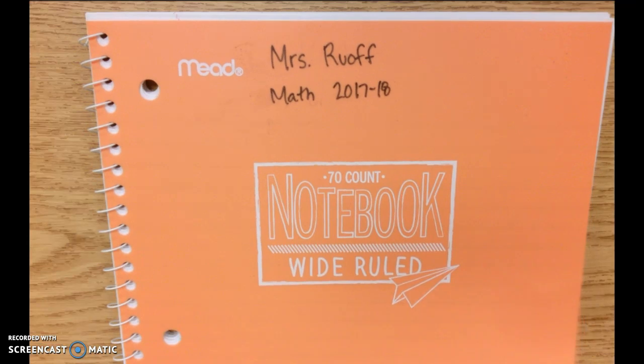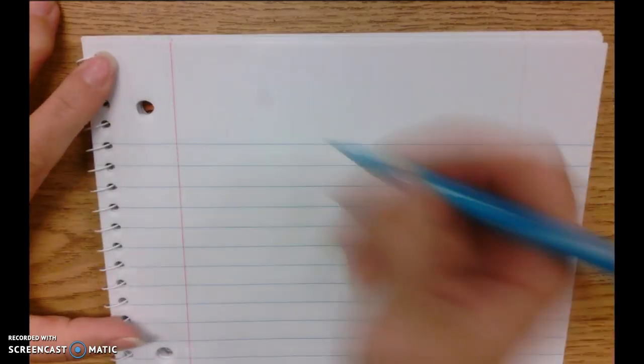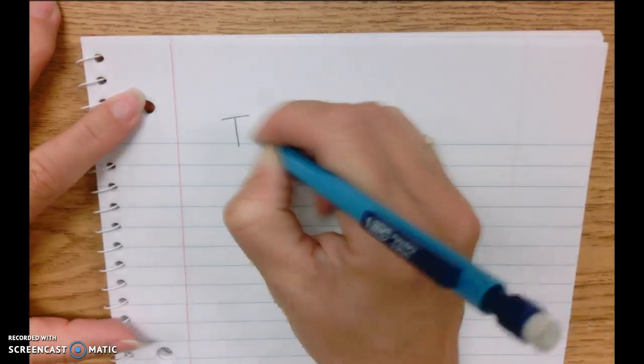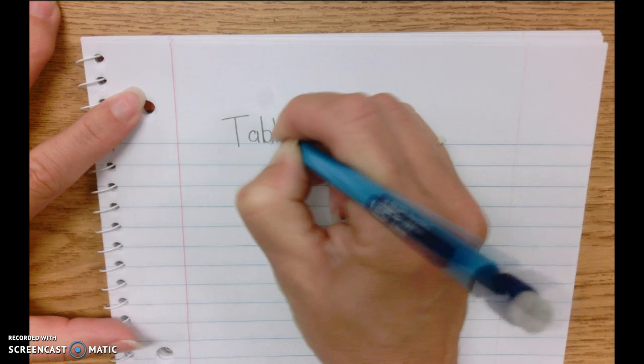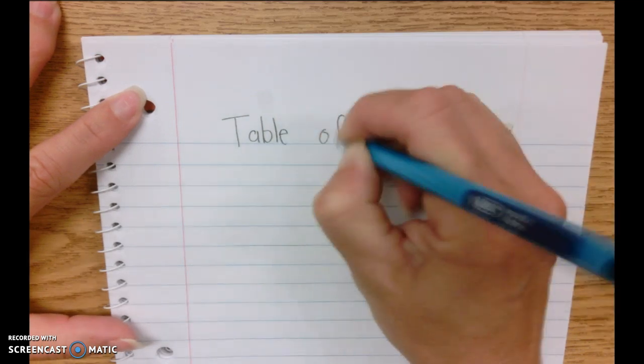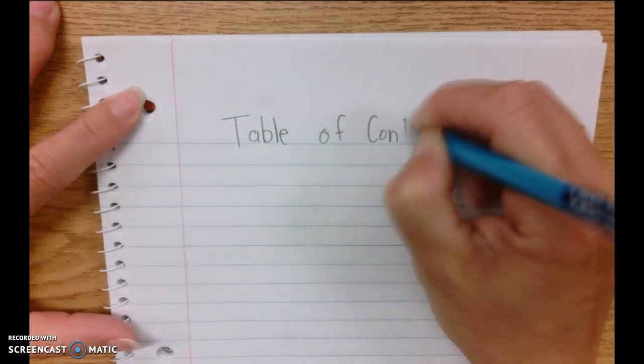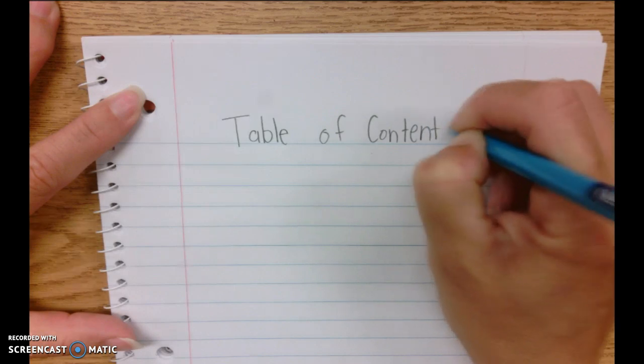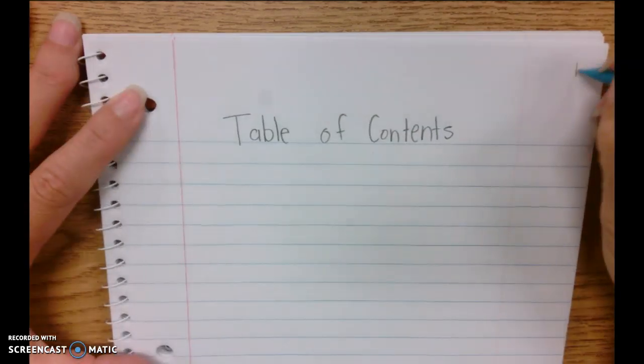After we have our math notebooks labeled, we're going to go ahead to our first page and we're going to start our table of contents. Make sure that when you are writing in your math notebooks that you use pencil so that we can fix any mistakes that we need to.